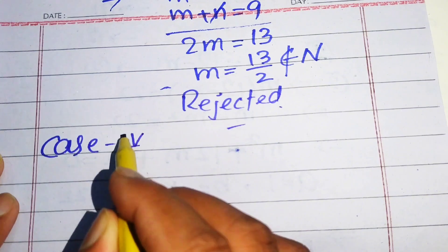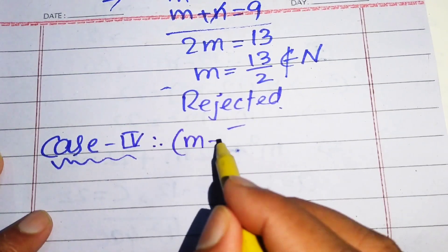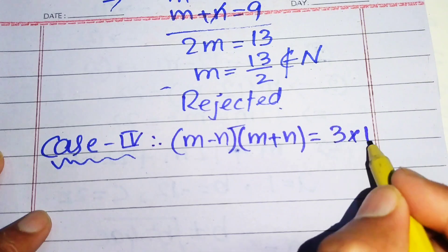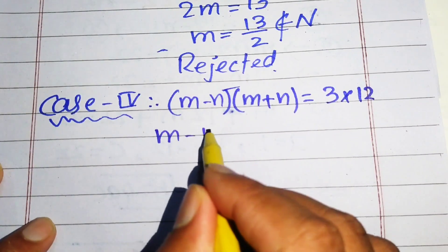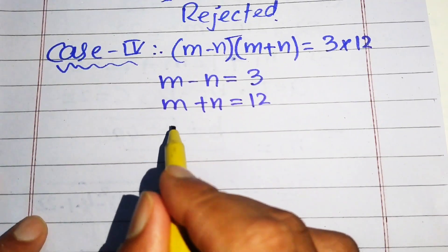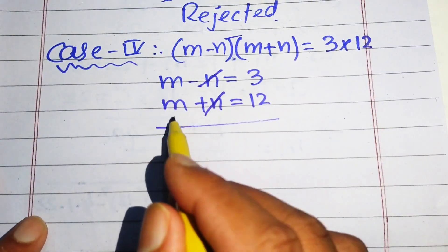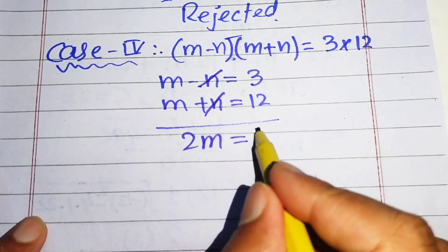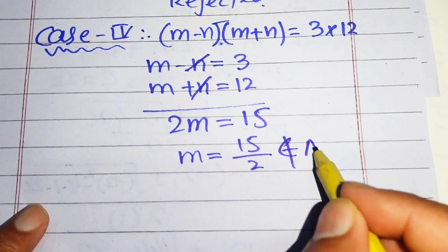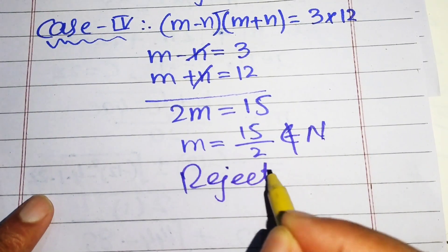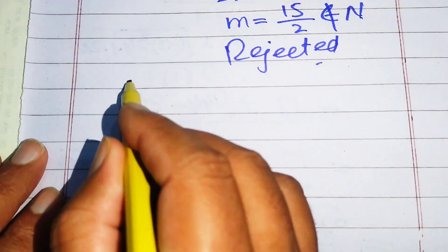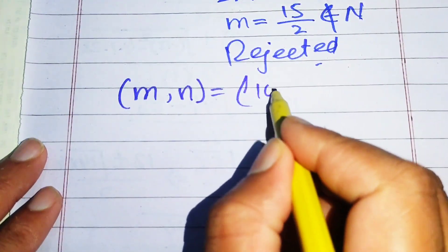Case 4: We compare (m minus n)(m plus n) with 3×12, giving m minus n = 3 and m plus n = 12. Adding these equations, the n terms cancel and we get 2m = 15, so m = 15/2. Since 15/2 is not a natural number, we reject this case as well. The only solution satisfying the equation is m = 10 and n = 8.